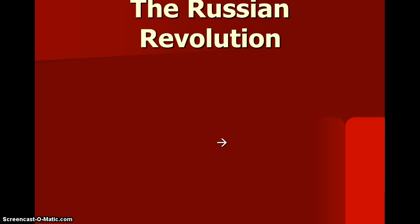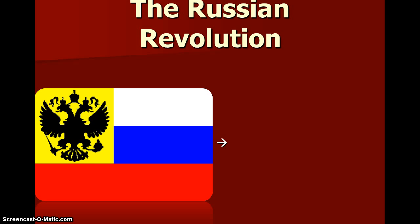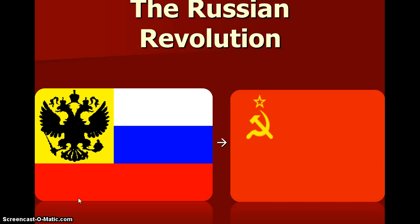Here is the flag of Russia before the Russian Revolution. And if you think about it, it's very close to the colors of the modern day Russian flag, but the modern day Russian flag does not have this yellow huge bird over here. And you have the Soviet Union flag which came after the Russian Revolution.